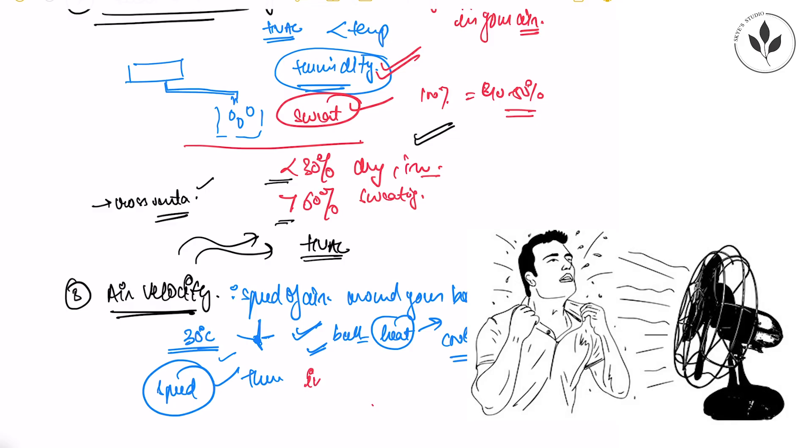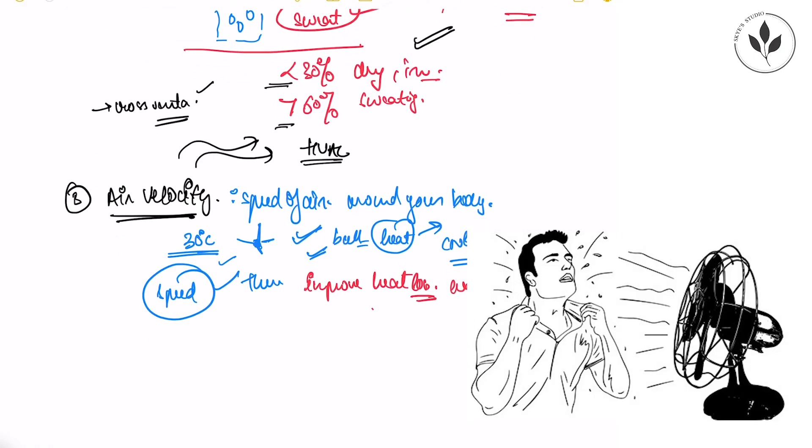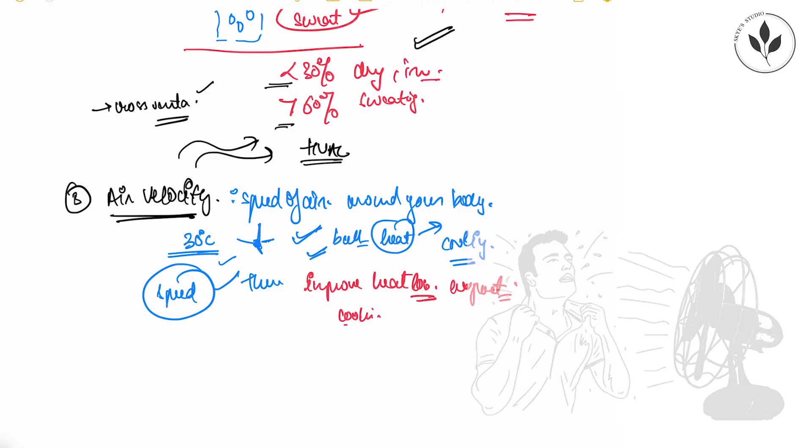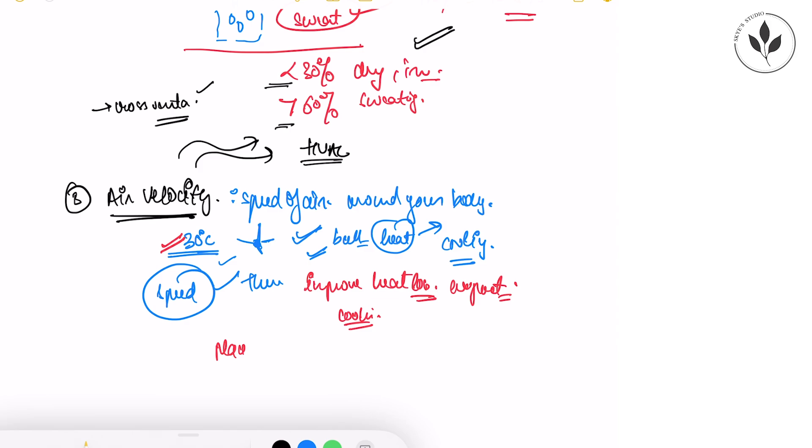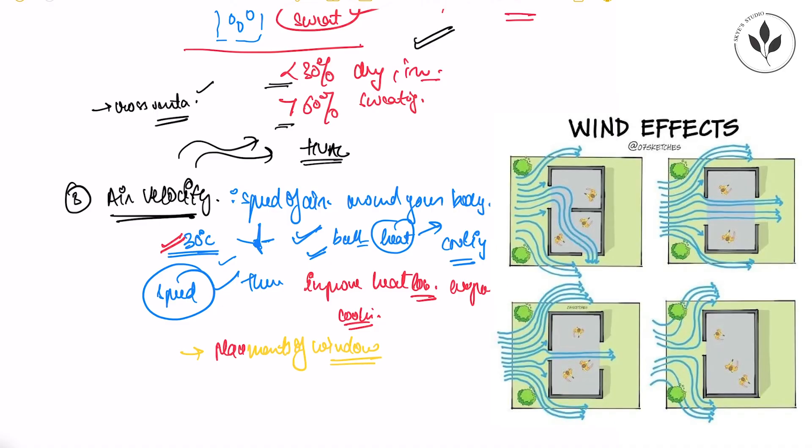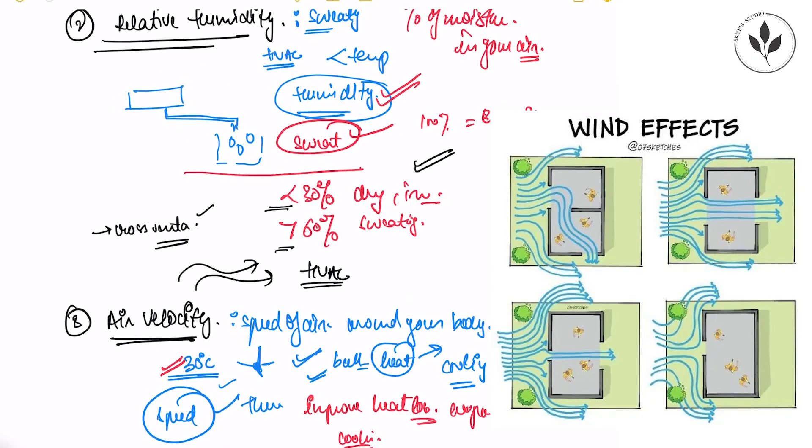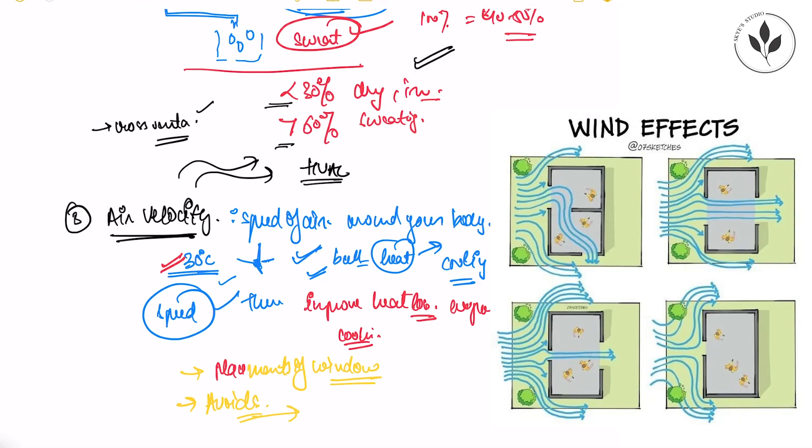That means the speed of air also helps in creating thermal comfort in human beings. Because it improves the process of heat loss through the process of evaporation making the human being feel more comfortable and more cooler than the average temperature around. Now how architecturally it's gonna help? We can give the proper placements of windows according to the wind direction or the flow of wind in your area. And the places which are colder you can avoid having gaps. These are all the environmental factors that impact the human thermal comfort.